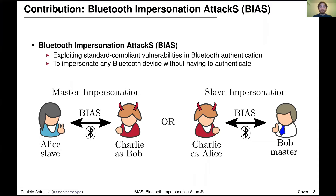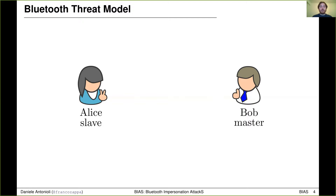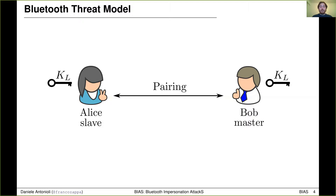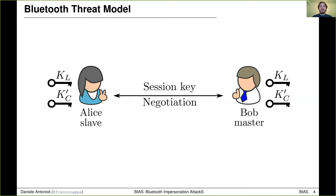Before jumping into the attack details, let's introduce our threat model. We consider two victim devices, Alice and Bob. Bob is the Bluetooth master and Alice is the Bluetooth slave. The Bluetooth master is the connection initiator and once the connection is established the roles can be switched dynamically. Alice and Bob complete Bluetooth pairing and establish a long-term key. Once paired, Alice and Bob start secure session establishment, authenticate the shared pairing key, derive a session key from the pairing key, and use the session key to encrypt their session.